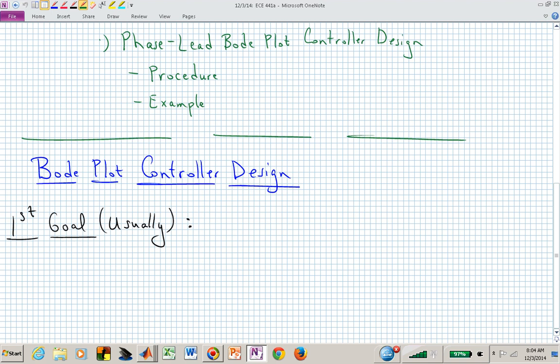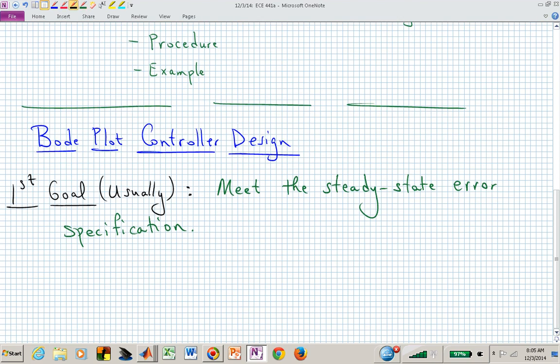Let's talk about Bode plot controller design in general. Typically the first goal when doing this controller design is to really address the steady state error issue or setting a gain. The first goal usually is to meet the steady state error specification, or your original plant may not yet have its gain specified. You need to figure out, based on your steady state accuracy, either due to a step, ramp, or maybe even a parabolic input, what that gain value needs to be.